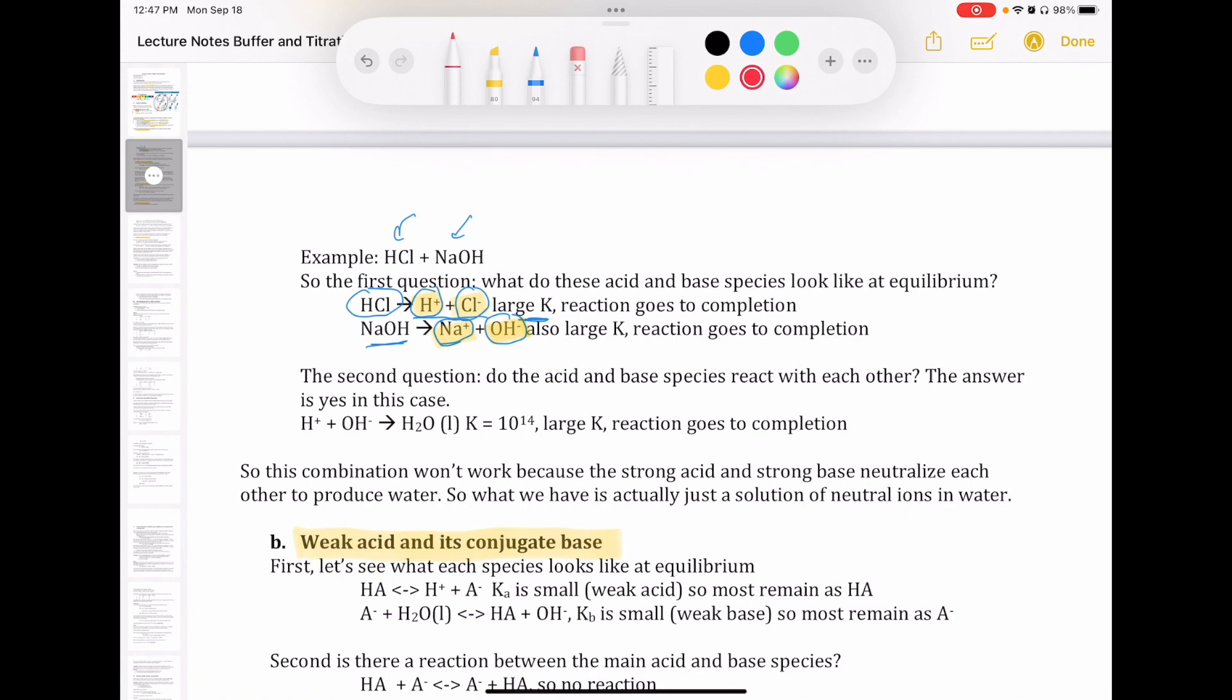Now, when I say which of these will react, you should think about which of these will react with a large K value. Because if they react with each other, but the K is really small, that means that the equilibrium doesn't really go far. So therefore, we don't have to worry about that. So what we're caring about here is reactions that happen to an appreciable extent, which means reactions with large K value.